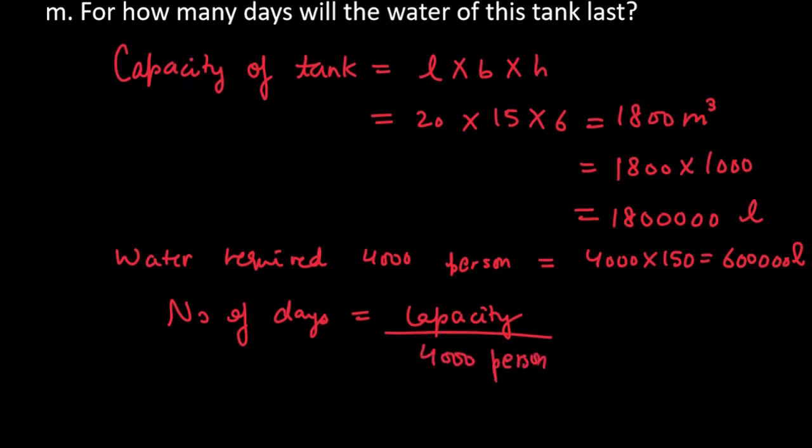This will give you in total 3 days, because you have 1,800,000 and you are dividing it by 600,000. If we divide the values, we will have 3. That means the water will last for 3 days.